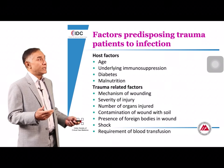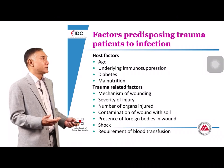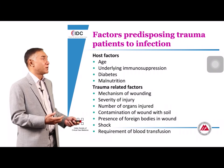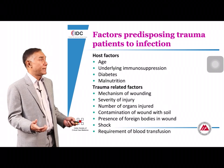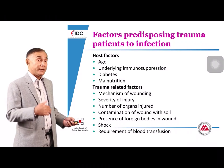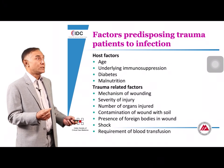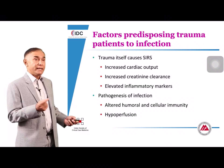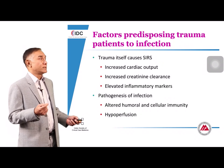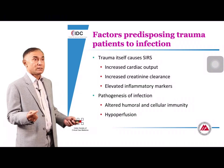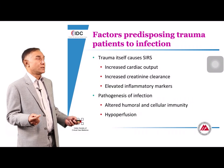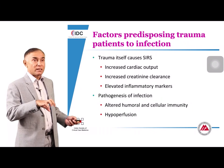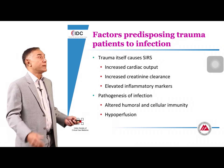Trauma patients become infected for several reasons: underlying host factors such as malnutrition and diabetes, trauma-related factors including the number and nature of injuries, contamination, foreign bodies, and multiple blood transfusions. The most important differential is that trauma itself causes clinical features indistinguishable from sepsis — increased cardiac output, increased creatinine clearance, elevated inflammatory markers — since the trauma-related SIRS process represents a mild-to-moderate immunodeficiency state predisposing to infection.